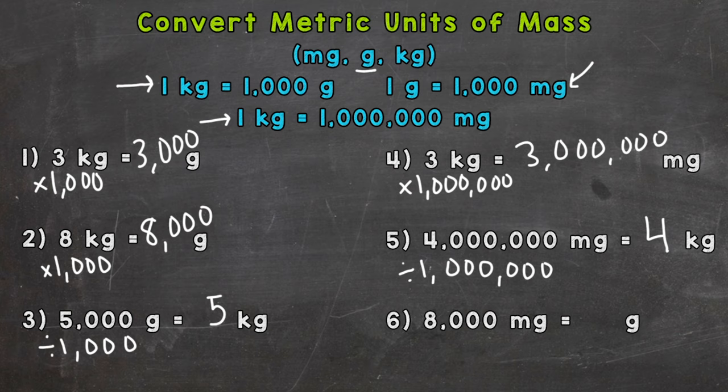And lastly, number six: 8,000 milligrams equals how many grams? Well, we need to split into groups of a thousand. Each one of those 1,000 is one gram. So milligrams to grams — divide by 1,000. And we end up with 8 grams.